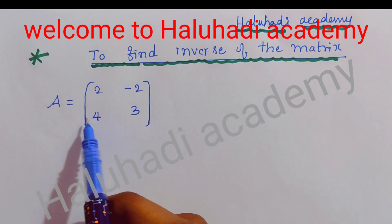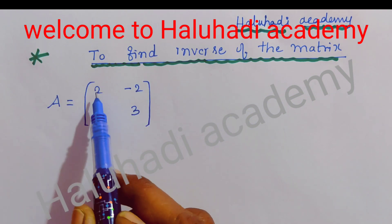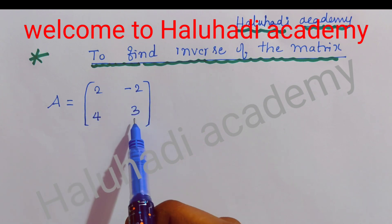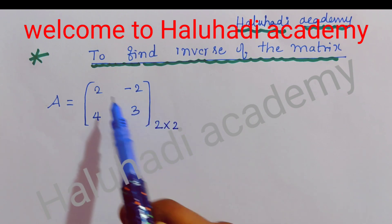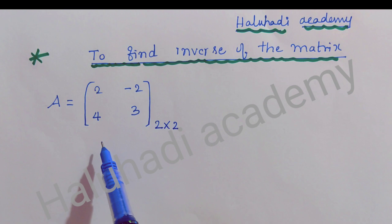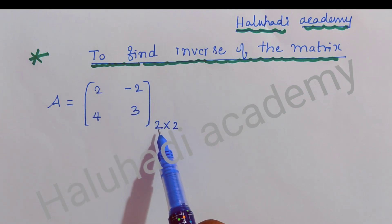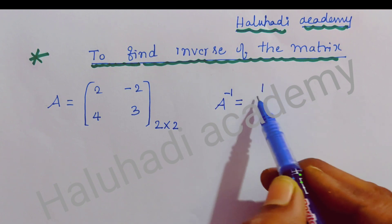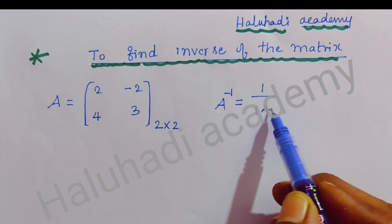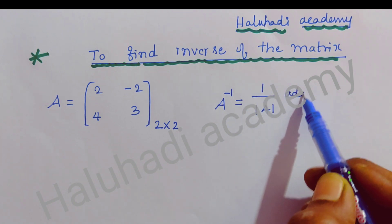Here there is a matrix A containing the elements 2, -2, 4, 3. The order of this matrix is 2×2 because there are 2 rows and 2 columns. There is one formula to find A inverse: A inverse equals 1 divided by determinant A into adjoint A.